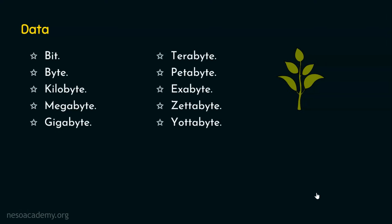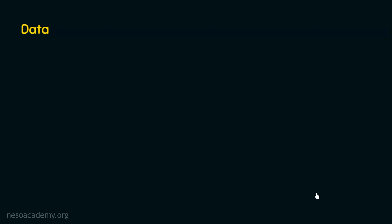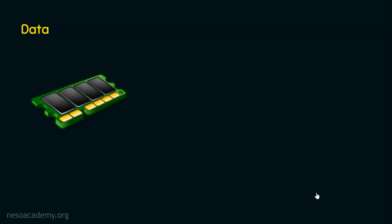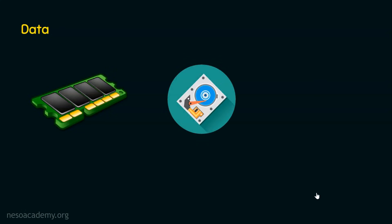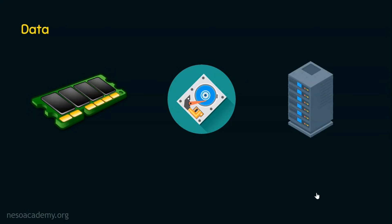When a database needs to handle this much information, obviously the main memory cannot handle this. Though the main memory is faster in nature, it cannot store the database because it's volatile. At the same time, secondary storage devices like hard disks or SSDs will also not be sufficient due to the increased volume of data. So we are in need of storage servers, data centers, or cloud that can handle large volumes of data.